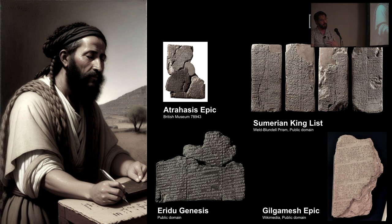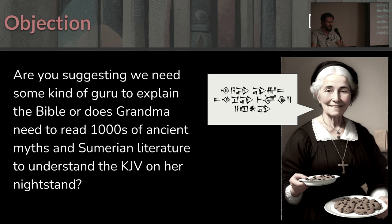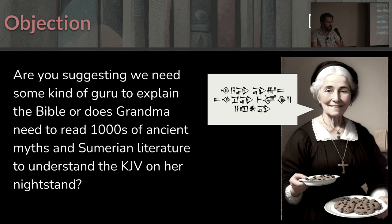An objection here: are you suggesting we need some kind of guru to explain the Bible, or does grandma need to read a thousand ancient myths in Sumerian literature to understand the KJV on her nightstand? Is the Bible incomprehensible if we don't have these other texts? At the same time, an Old Rock the Good Ag story is kind of incomprehensible if you don't know what it is. So you've got to bridge that gap somehow.